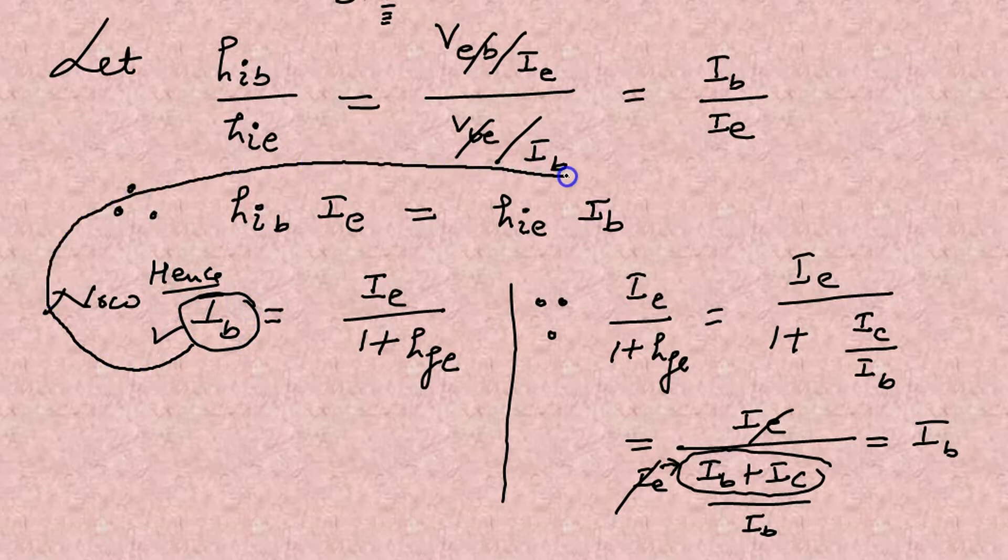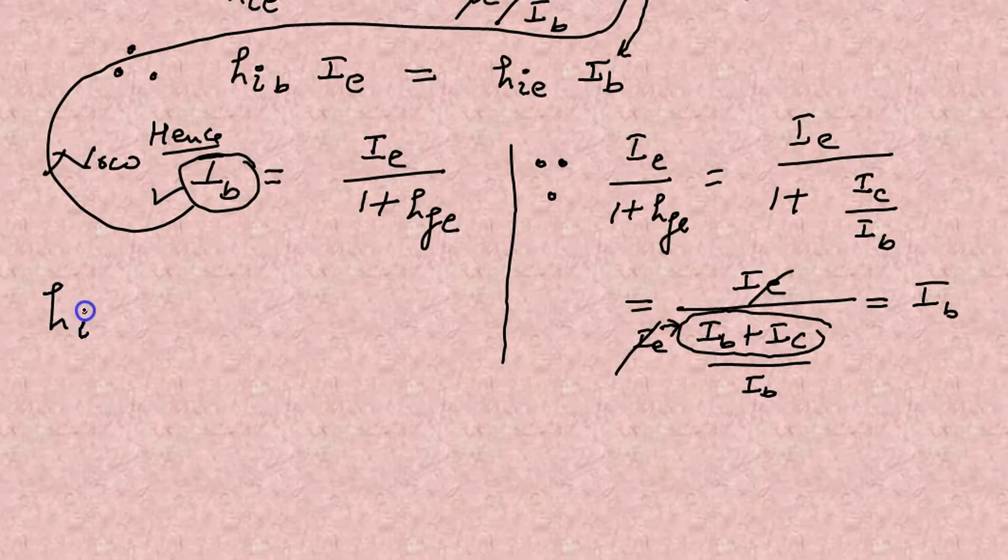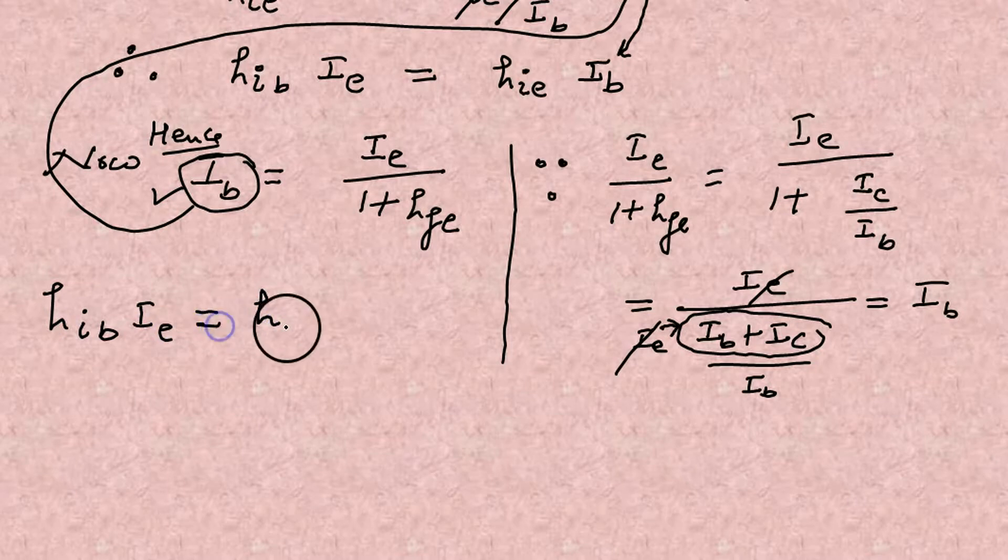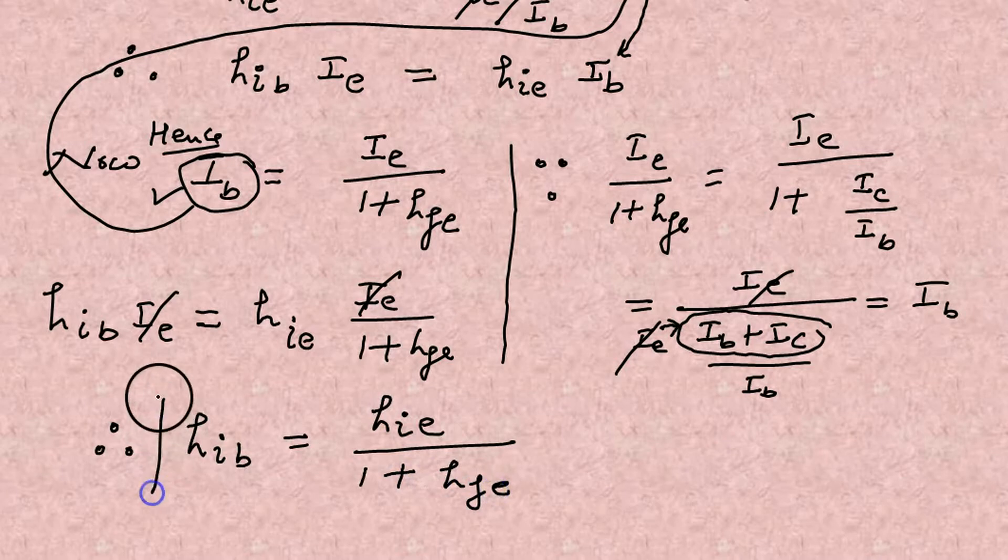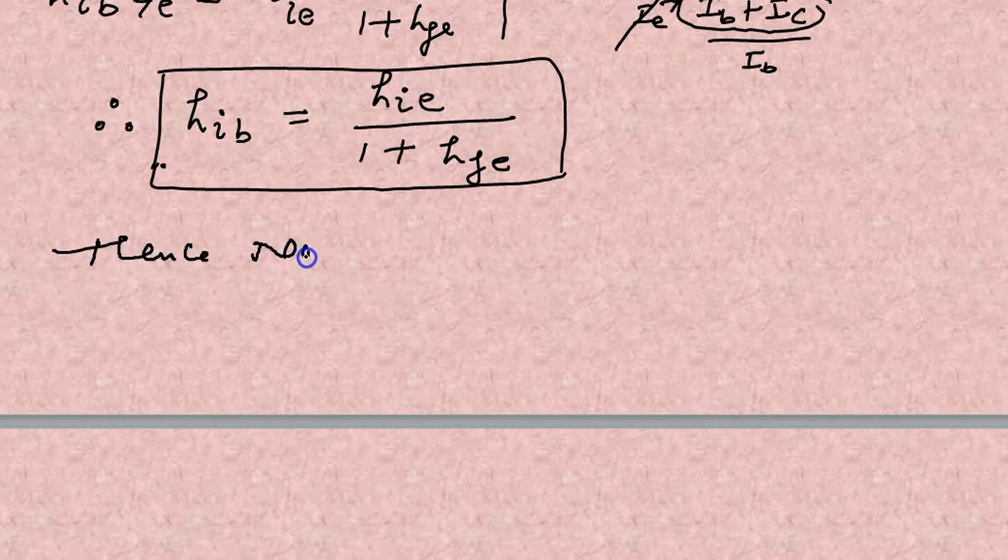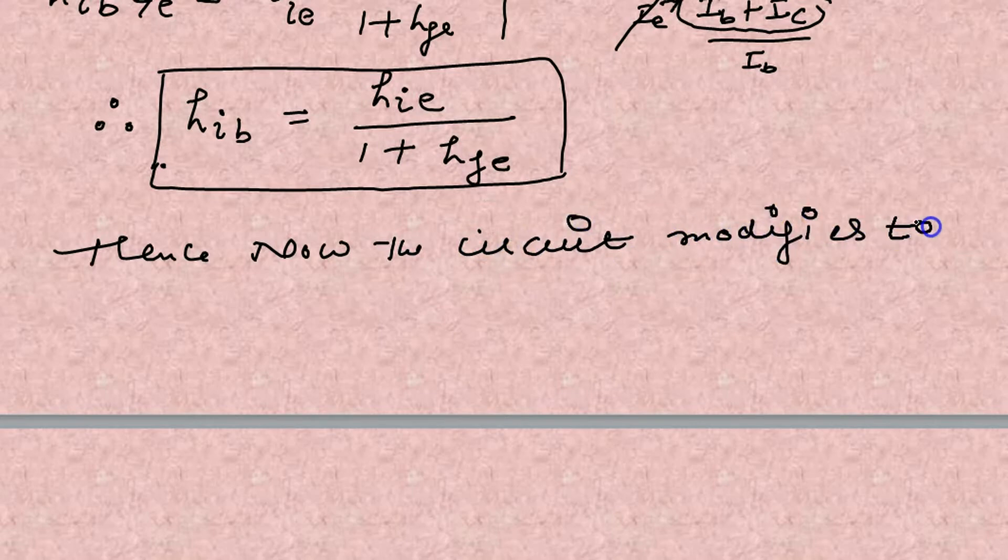So substituting IB here. So HIB times IE is equals to HIE times IE upon 1 plus HFE. IE cancels out. So HIB becomes HIE upon 1 plus HFE. This is again the very important expression for HIB.